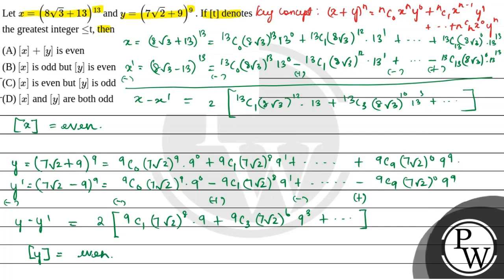Considering the given options, [x] + [y] is even — that is, option A is correct. Since both [x] and [y] are even, their sum will also be even. Hope you understood the solution. Thank you.